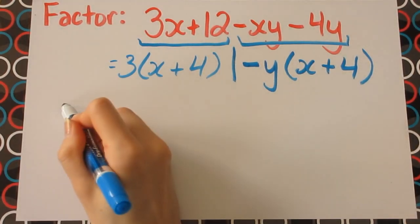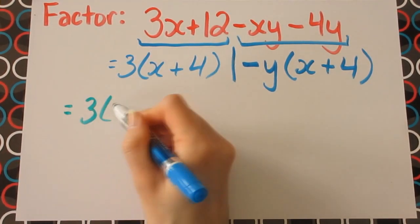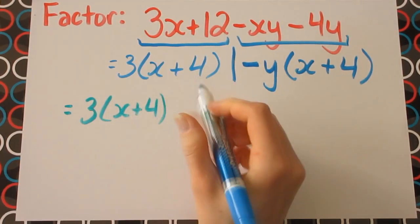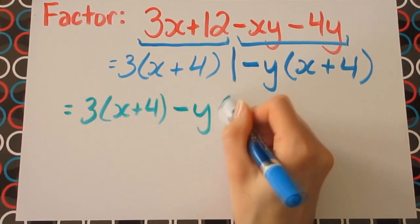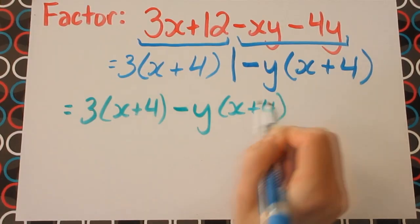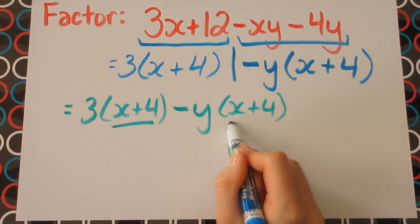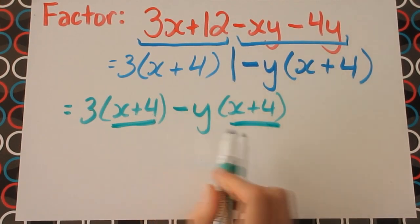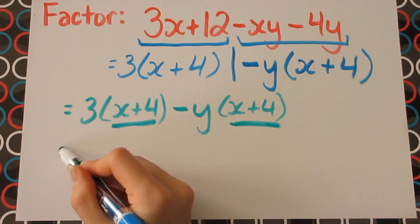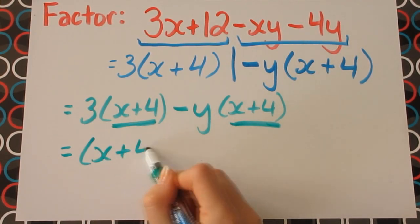Now let's put this all together. We have 3 multiplied by x plus 4 minus y multiplied by x plus 4. And you can see that the x plus 4 is the common factor between both of these two terms. So when we take out that common factor of x plus 4, we're essentially dividing it off of both of these two terms.